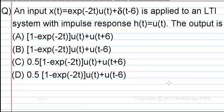The third option is 0.5·[1 - e^(-2t)]·u(t) + u(t+6). The fourth option is 0.5·[1 - e^(-2t)]·u(t) + u(t-6).